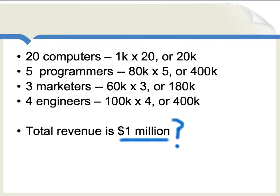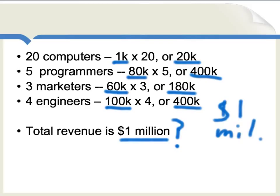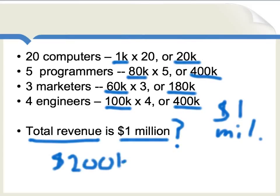Now let's consider that same estimation when market prices are present. Each computer costs $1,000, so 20 computers run to about $20,000. Each programmer costs about $80,000, so five of them runs to about $400,000. The marketers at $60,000 a year come to $180,000 total, and four engineers at $100,000 times 4 means $400,000. Adding up all those costs gives about $1,000,000. You then compare that to your total revenue: if revenue is a lot more than a million, maybe it's a good idea; if total revenue is only $200,000, then probably the project is a very bad idea. This process of calculation with market prices is highly imperfect and prone to error, but it gives you a basic starting point for figuring out how resources should be allocated and when a new investment is a good idea.